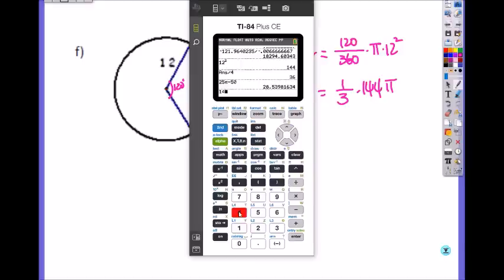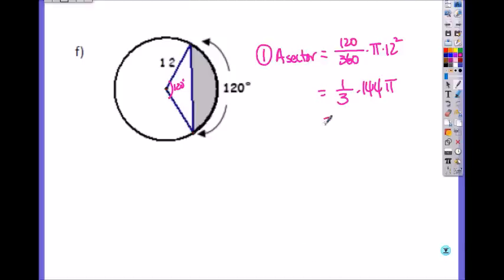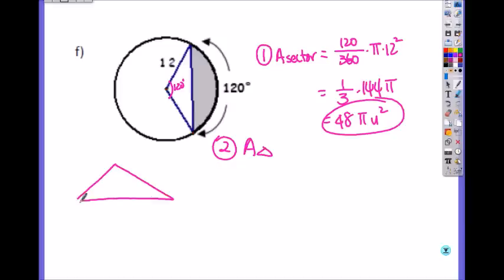Let's see if it simplifies. 144 divided by 3 is 48. So it's 48 pi unit squared, and then we have to subtract the area of a triangle. So let me redraw it. It looks like this: 120 degrees and 12. If we use this as hypotenuse, then we can draw a triangle this way to find the height, then we get a right triangle, and then we can just double the area.